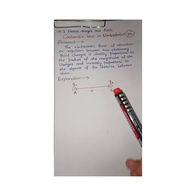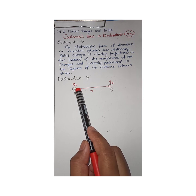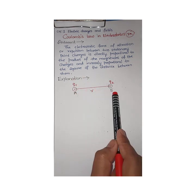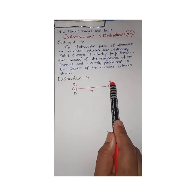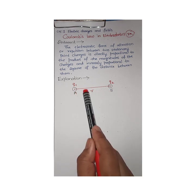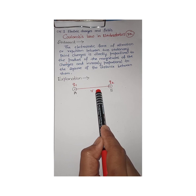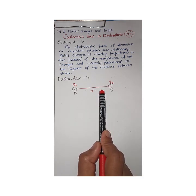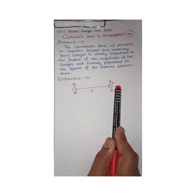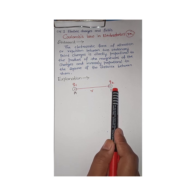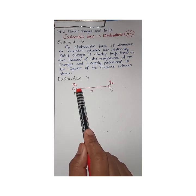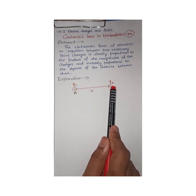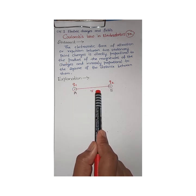Now we will see the mathematical explanation of Coulomb's Law. I have considered two charges named Q1 and Q2. Q1 is at position A and Q2 is at position B, kept at a distance r apart. They are kept in a vacuum, though this law is also applicable in other media such as air, oil, kerosene, glass, or water.